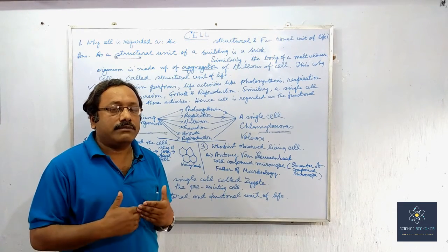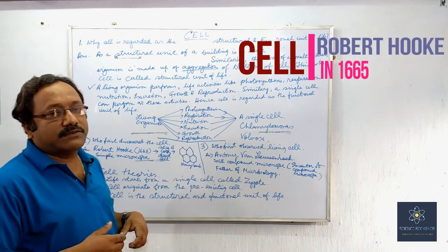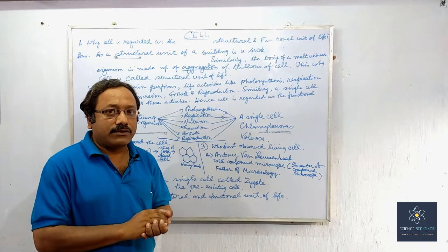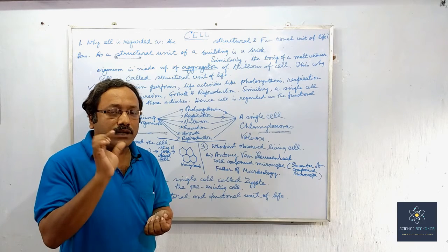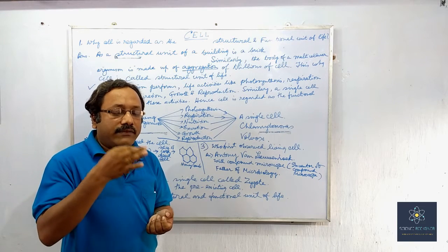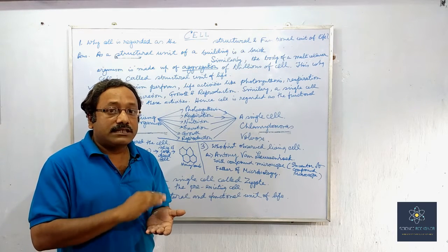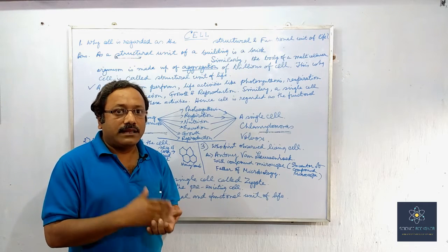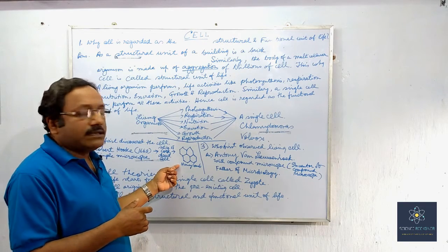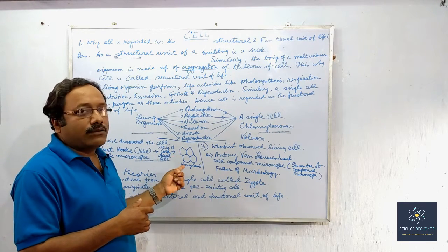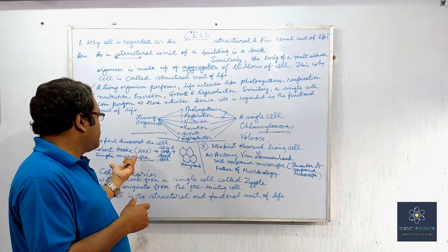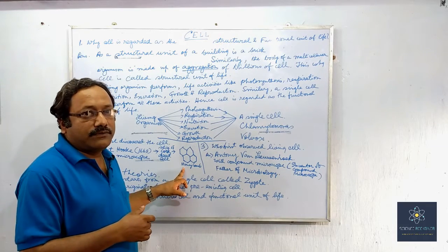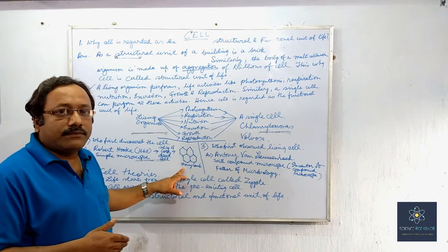Now, who first observed the cell? Robert Hooke in the year 1665 observed dead cells under the simple microscope — a simple microscope being only a magnifying glass. Under the magnifying glass he observed cells in a slice of cork. He observed a honeycomb-like hexagonal structure. These were all dead cells. Robert Hooke was the first to observe this honeycomb-like structure in the slice of cork.